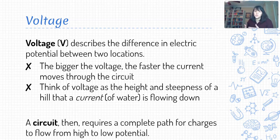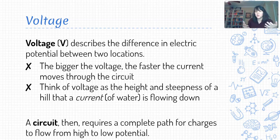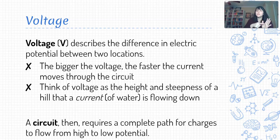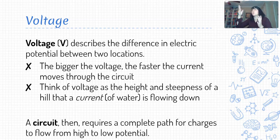What we need from our circuit is a complete path from both high to low potential. This is why if we try to connect a wire to only one side of a battery, nothing happens — the current isn't going to flow because it doesn't know which way it's supposed to go. We need to connect to both a high and a low potential terminal of a battery in order to really propel our charges in one particular direction.